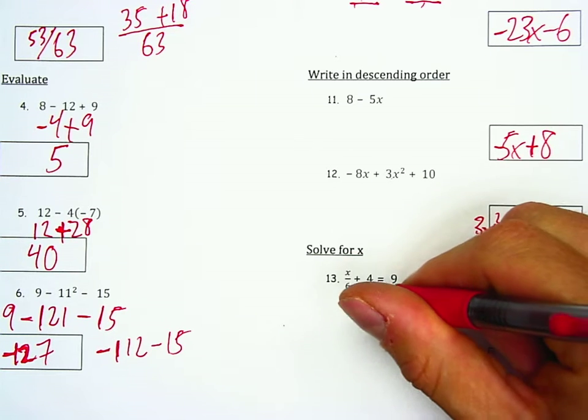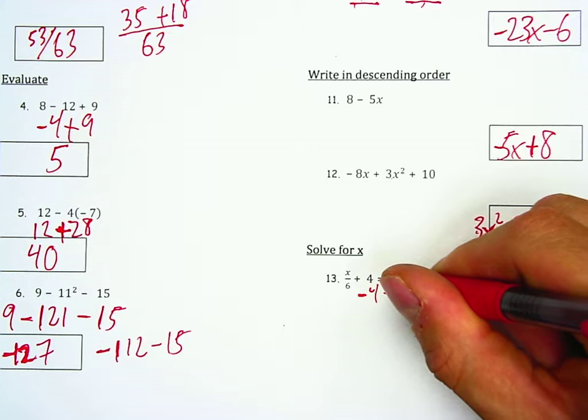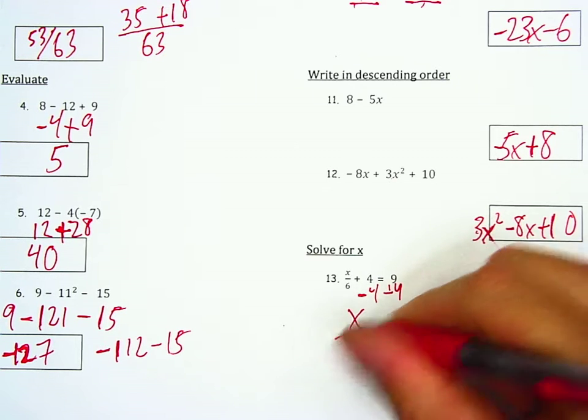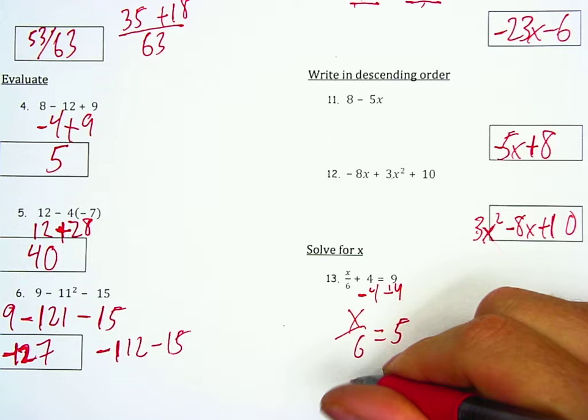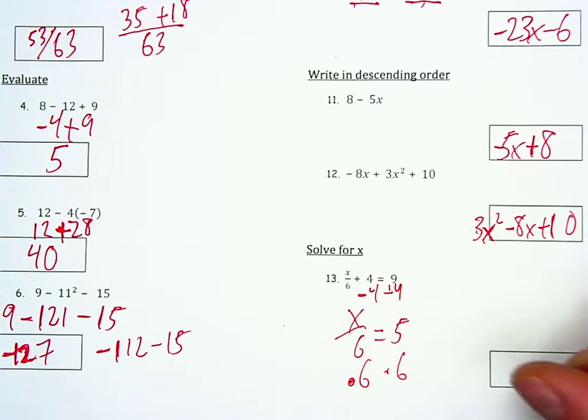Question 13. We're subtracting 4 from 9 to get 5, and then we're timesing 5 by 6 to get 30. Here will be 30 in value. All right, let me set up the next page.